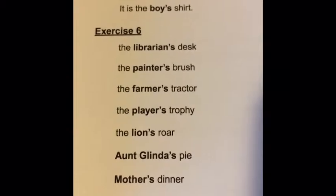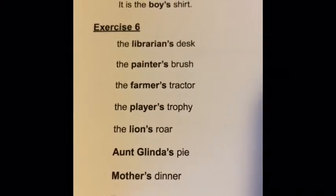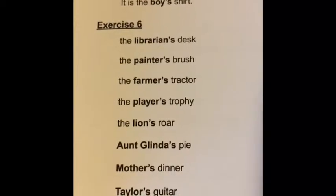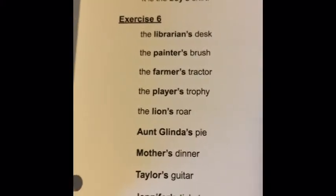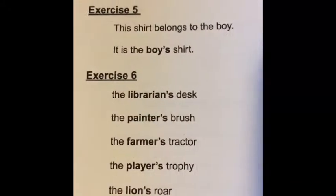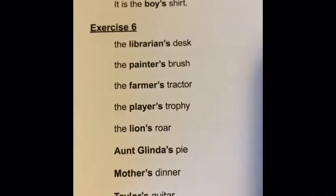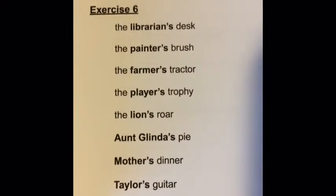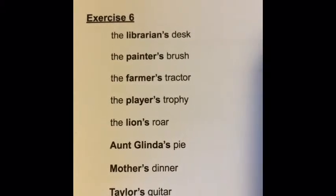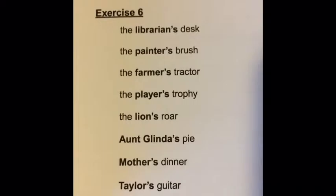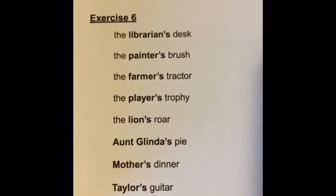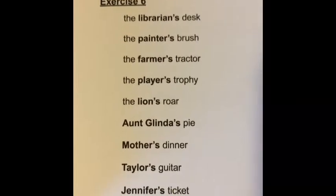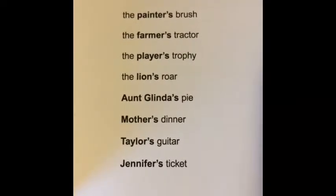Look at exercise five. This sentence says 'this shirt belongs to the boy,' and the next says 'it is the boy's shirt.' Do you see the apostrophe s at the end of the word boy? We have been adding s's to make things plural, but this is not plural — they're not talking about more than one boy. The apostrophe s turns the noun 'boy' into an adjective that tells whose shirt it is. Whose shirt? It's the boy's shirt — 'boy's' is your adjective.